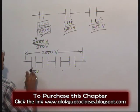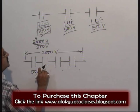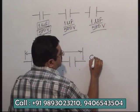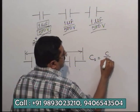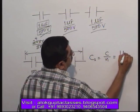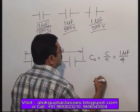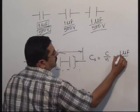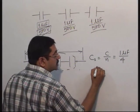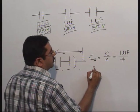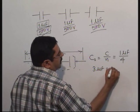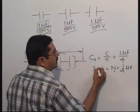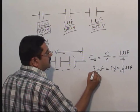That's done. But what happened is — the capacitance decreases. With 4 capacitors in series, the effective capacitance is C by N, where C is 1 microfarad and N is 4, so the combination gives a capacitance of 1/4 microfarad. The requirement is 3 microfarad. So 3 microfarad equals N times 1/4 microfarad. Cross multiplying: N equals 12.